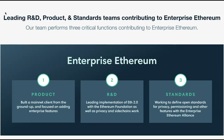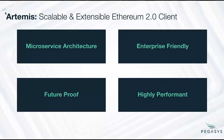Artemis is our scalable and extensible Ethereum 2.0 client. It has a microservice architecture to allow distributed deployment and ease of load balancing. It's enterprise-friendly due to its permissive Apache 2.0 license and the fact that it's written in Java. It's also future-proof because we're the only team with a current live Ethereum 1.0 client that also has a team dedicated to implementing Ethereum 2.0. It's highly performant because we've always built it with a focus on modular architecture and performance.